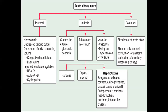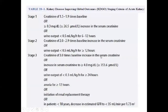Staging for the progression of kidney injury uses the KDIGO (Kidney Disease Improving Global Outcomes) criteria. This gives us stage 1, stage 2, and stage 3 of acute kidney injury.